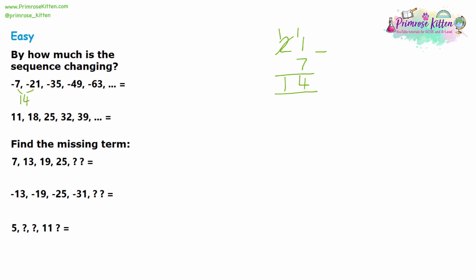Let's check the next one. You might assume the entire sequence is plus 14, and it is, but you do want to check — because sometimes you might get a sequence that doesn't increase by the same amount each time. Those are called quadratic sequences or geometric sequences. So to confirm it's linear: from 21 to 35, 5 take away 1 is 4, and 3 take away 2 is 1, so that's 14 as well. So now we're fairly confident this is going to be a linear sequence, going up by 14 every single time.